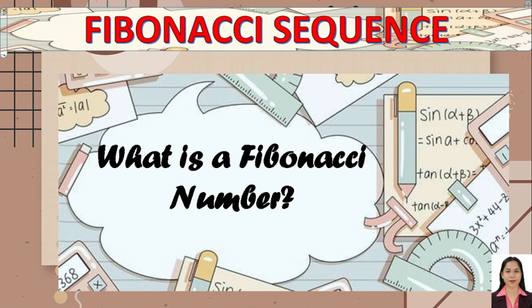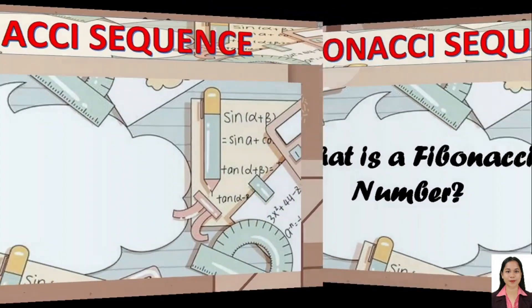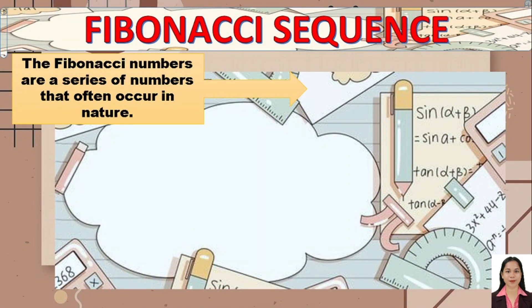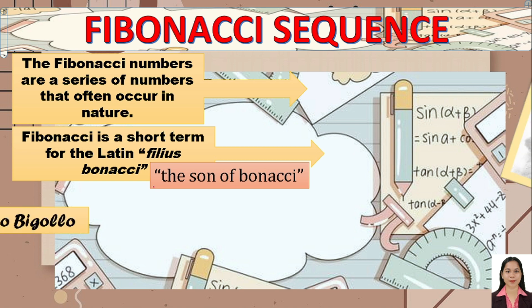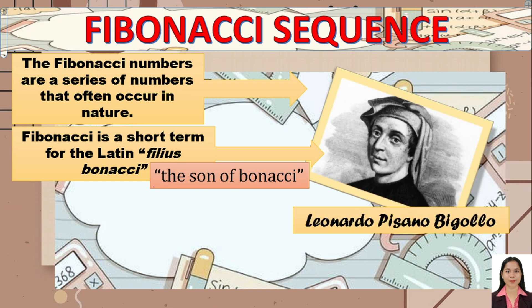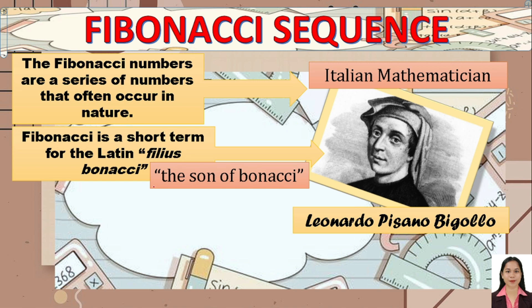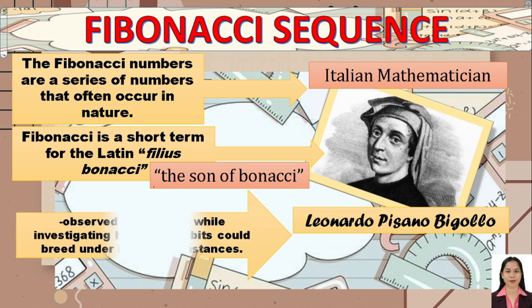So let's start. What is a Fibonacci number? The Fibonacci numbers are a series of numbers that often occur in nature. 'Fibonacci' is a short term for the Latin 'filius Bonacci,' meaning 'the son of Bonacci.' Leonardo Pisano Bigolio was an Italian mathematician who developed the Fibonacci numbers.